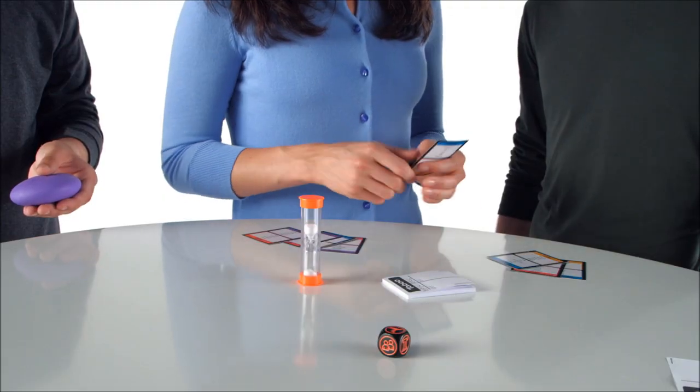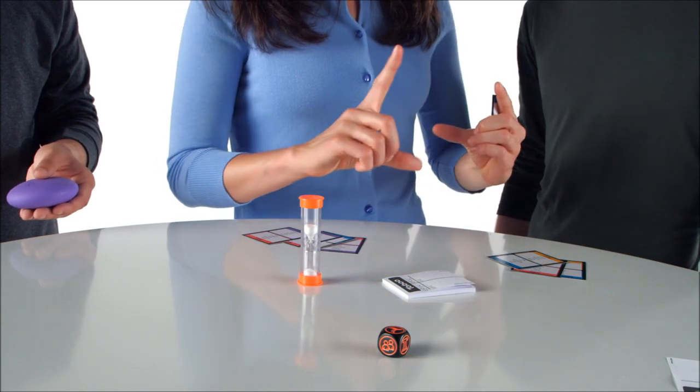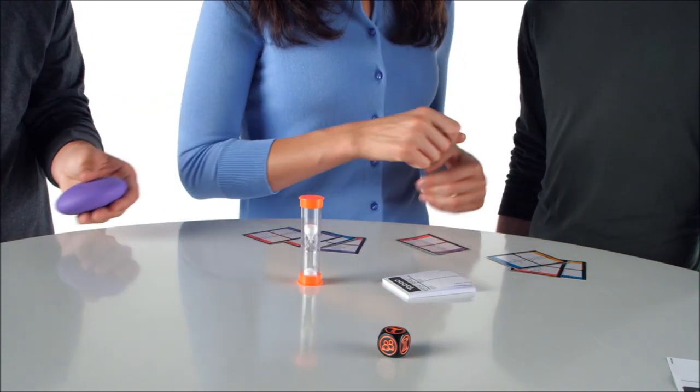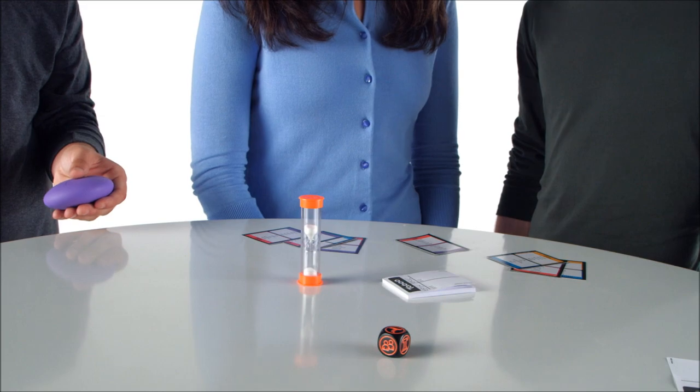If that player says a taboo word, they can get squeaked by the other team. They will then lose the chance to guess that clue and score a point.